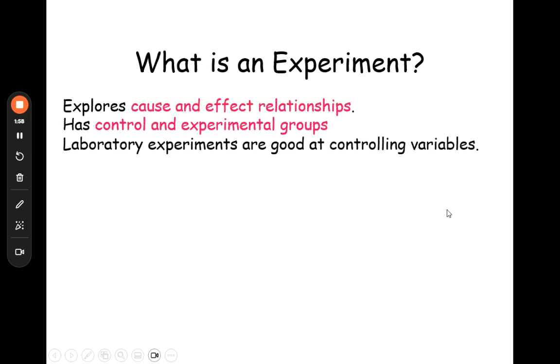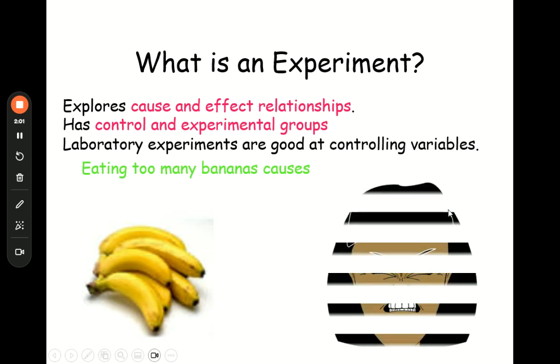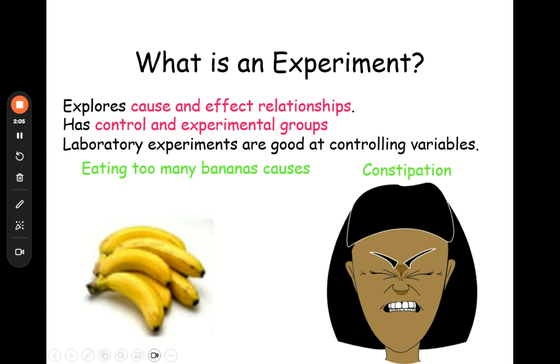So what is an experiment? Write all this down. The experiment is what this video is going to be focusing on. It is the most important and most powerful method of study. It is the only type of study that establishes cause and effect. If you want to know if one thing causes the other, you have to do an experiment. You can't always do an experiment because of ethical violations.